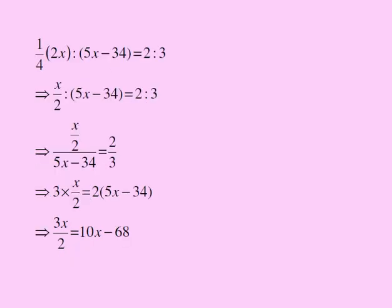So basically this is our equation from the previous slide. We can cancel 2 and 4 and get x over 2 here. It didn't change anything else. A ratio is really another way of writing fractions. So instead of x over 2 to 5x minus 34 I can write x over 2 divided by 5x minus 34. Instead of 2 to 3 I can write 2 over 3.